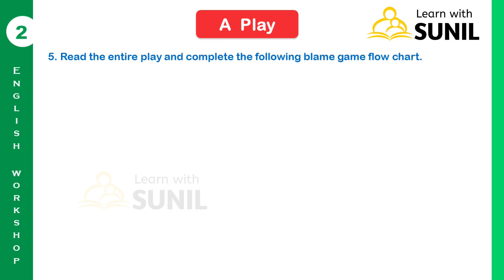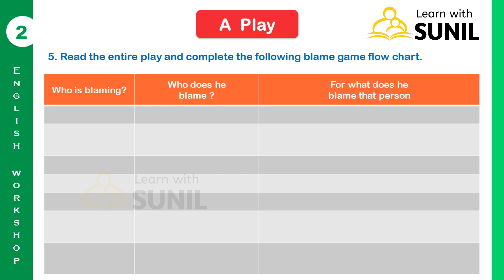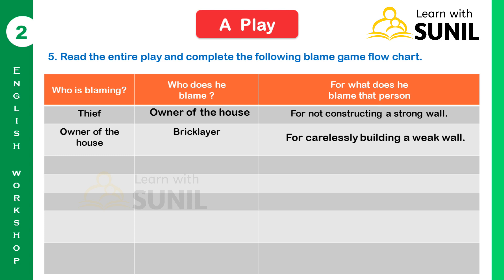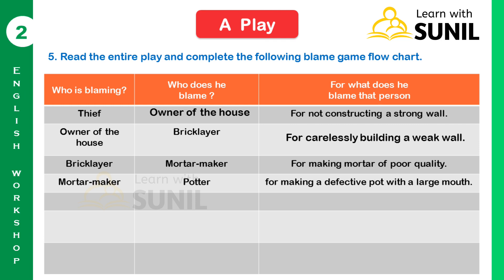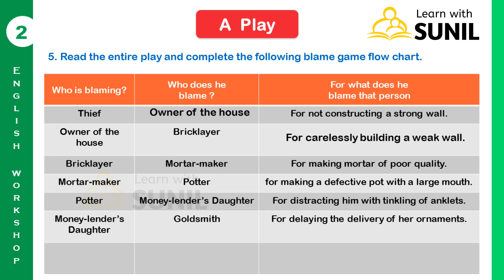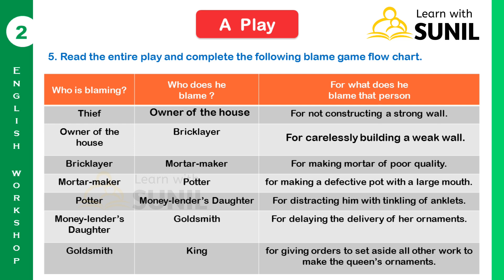Fifth question: Read the entire play and complete the following blame game flow chart. Thief blames the owner of the house for not constructing a strong wall. Owner of the house blames the bricklayer for carelessly building a weak wall. Bricklayer blames the mortar maker for making mortar of poor quality. Mortar maker blames the potter for making a defective pot with a large mouth. Potter blames the moneylender's daughter for distracting him with the tinkling of anklets. Moneylender's daughter blames the goldsmith for delaying the delivery of her ornaments. Goldsmith blames the king for giving the order to set aside all other work to make the queen's ornaments.